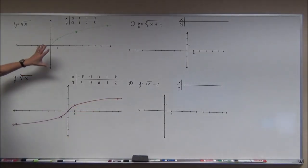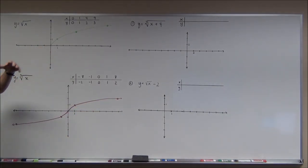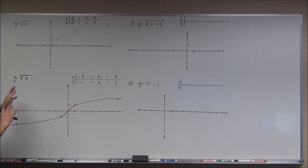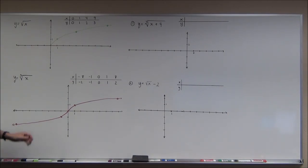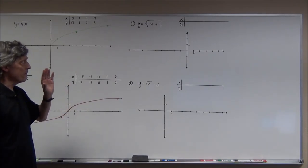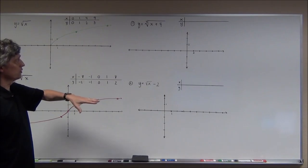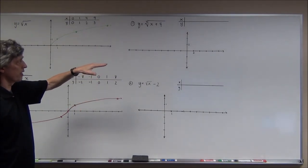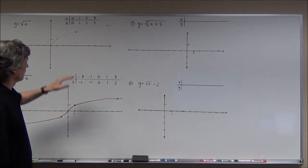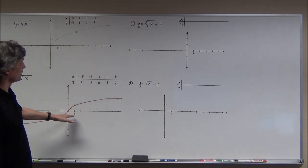These are the two graphs you're going to use because all the problems on your worksheet are transformations of them — shifting them right, left, upward, downward, maybe even stretching or shrinking them with dilations. My suggestion is to make a t-chart, plug those values in, graph the points, and try to make a smooth curve that should look something like one of these.